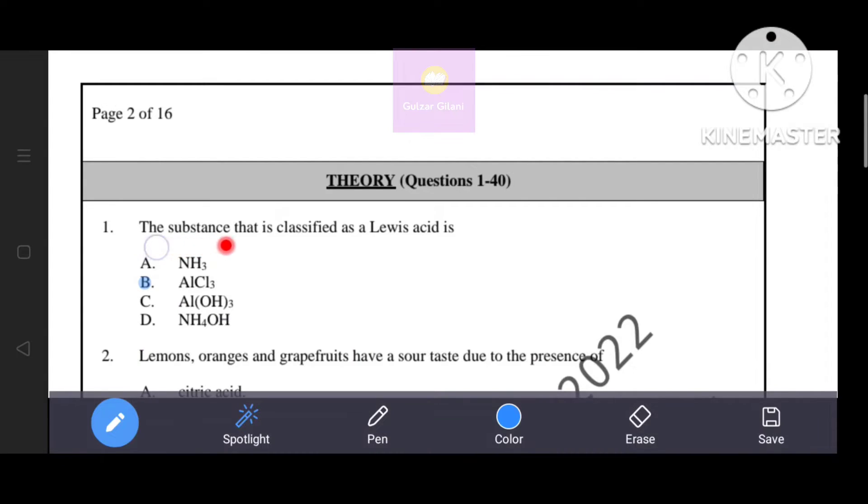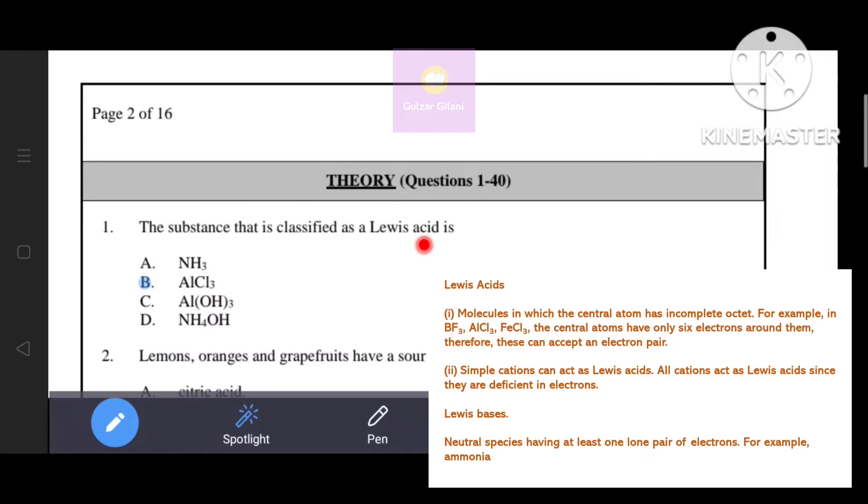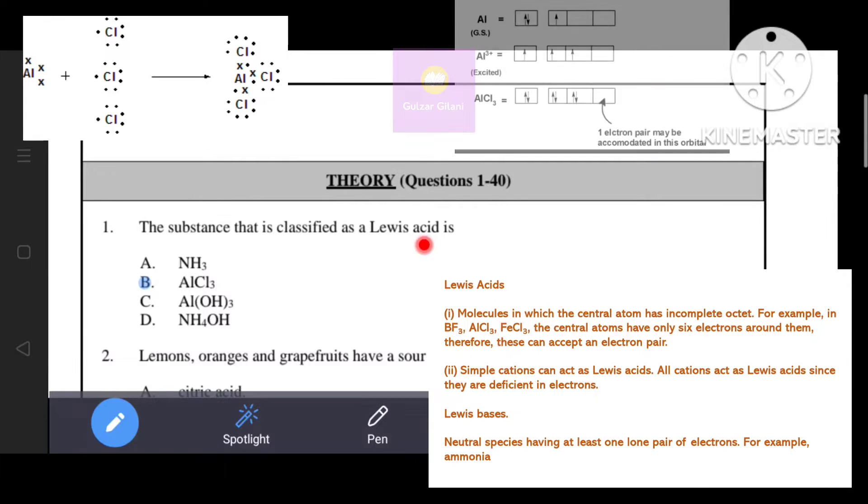The substance that is classified as a Lewis acid is... As you know, a Lewis acid is a substance that can accept a pair of electrons to form a coordinate covalent bond. Molecules in which the central atom has incomplete octet, for example BF3, AlCl3, FeCl3.